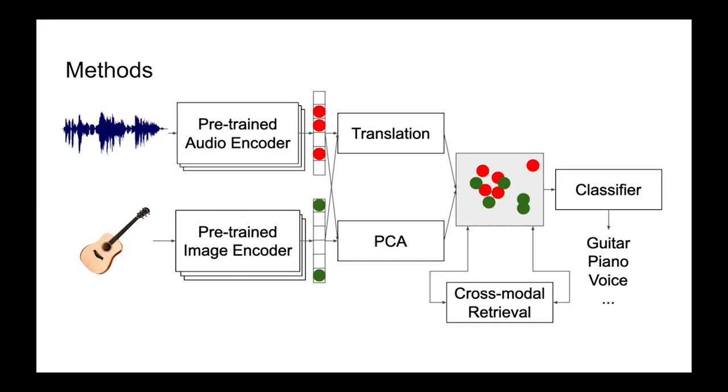Here are our methods. First, we extract embeddings using pre-trained embedding algorithms from each modality. For example, in image we use ResNet and VGG, and in audio we use YAMNet and OpenL3.